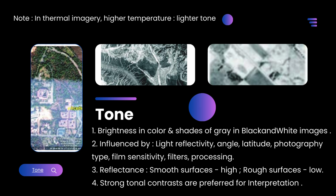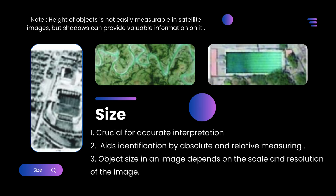Size is crucial for accurate interpretation and aids identification by absolute and relative measuring. Object size in an image depends on the scale and resolution of the image. Note: height of objects is not easily measurable in satellite images, but shadows can provide valuable information on it.